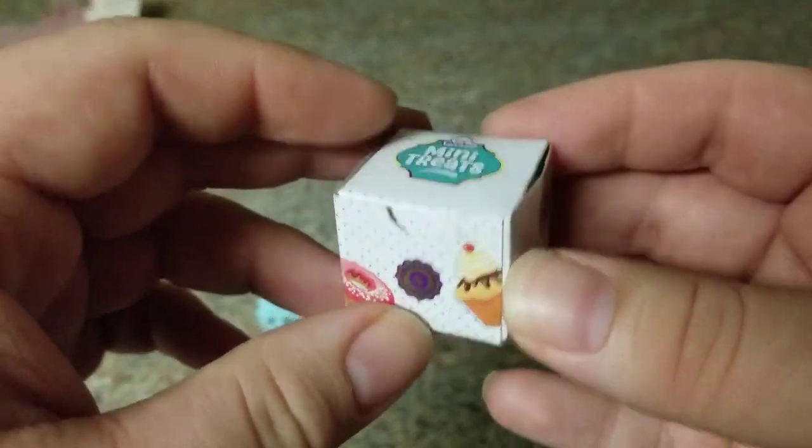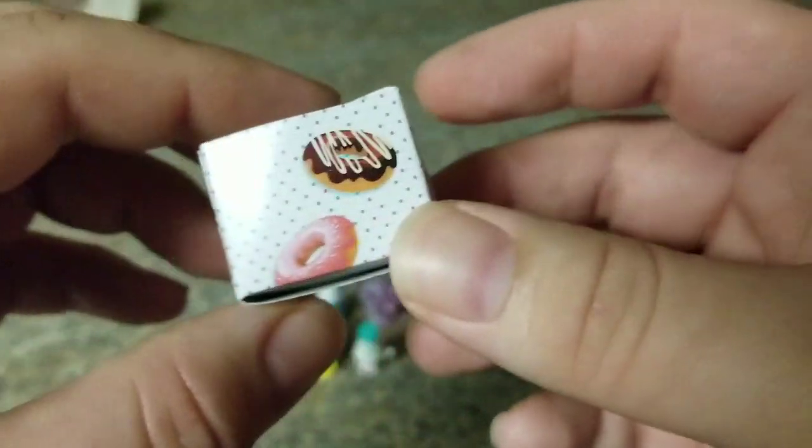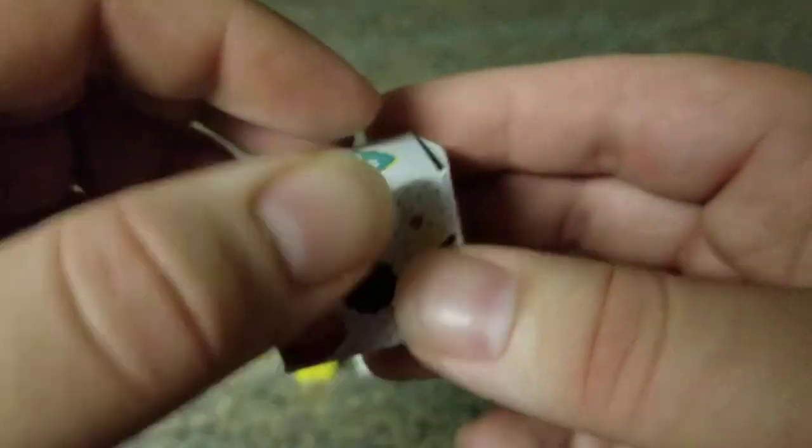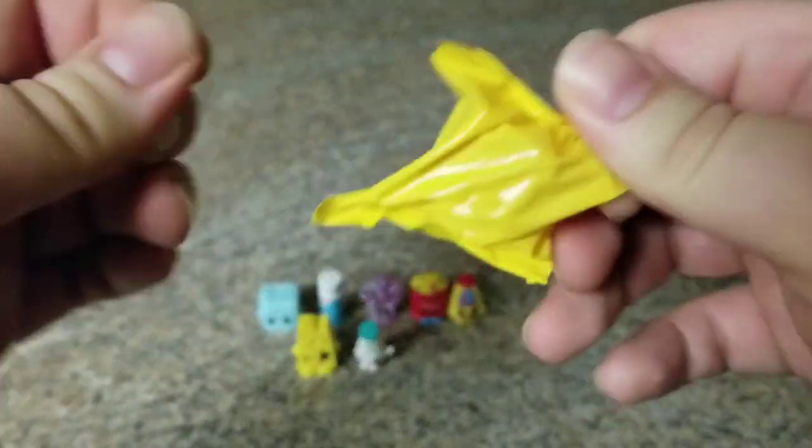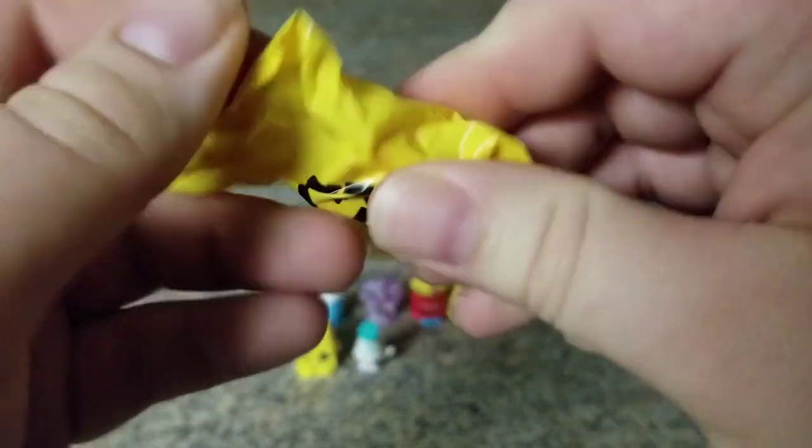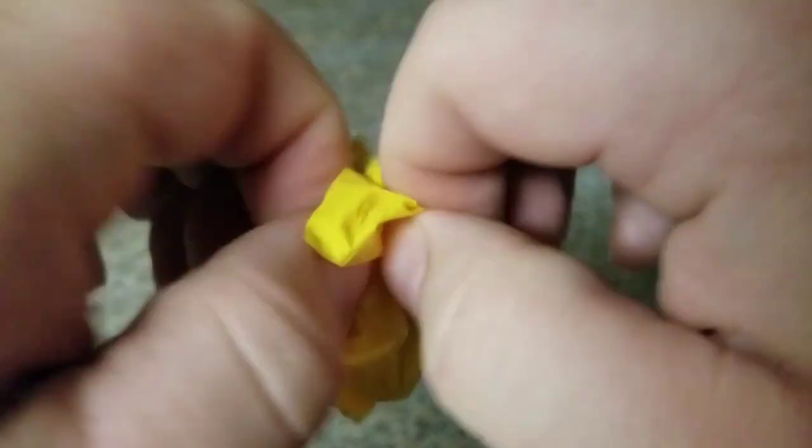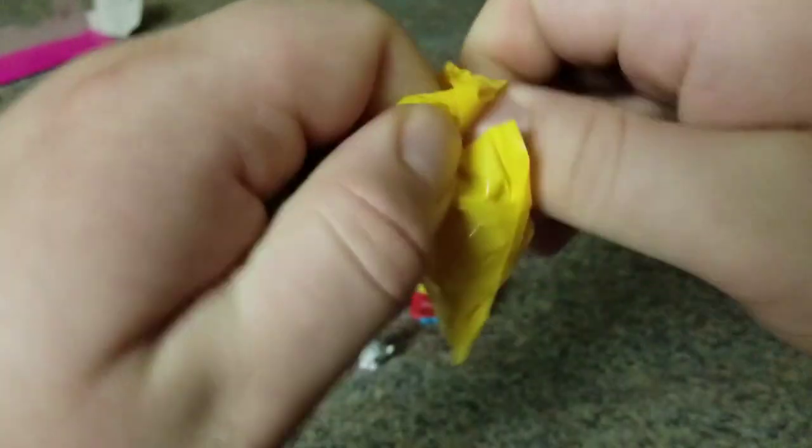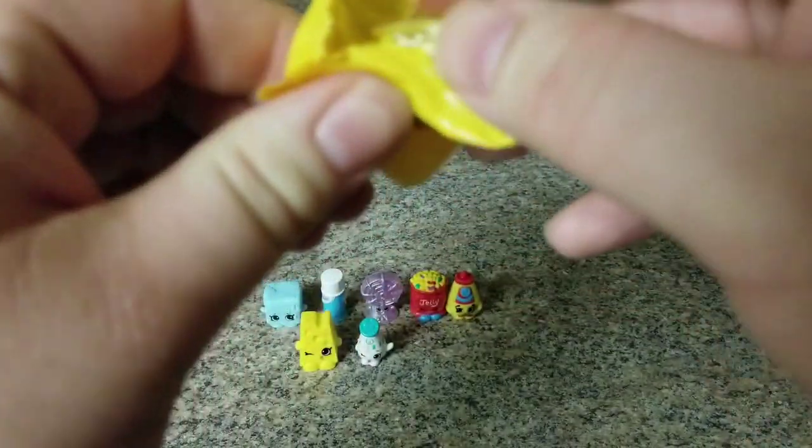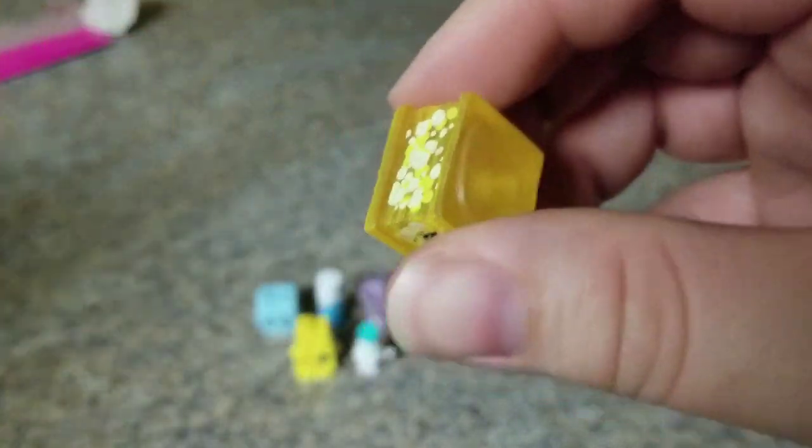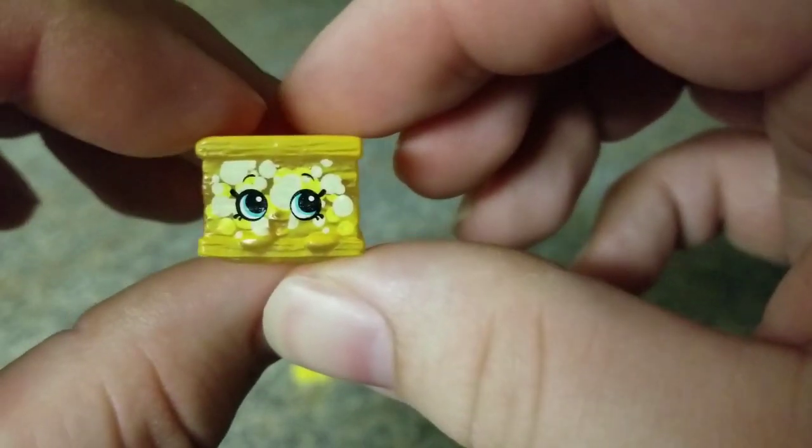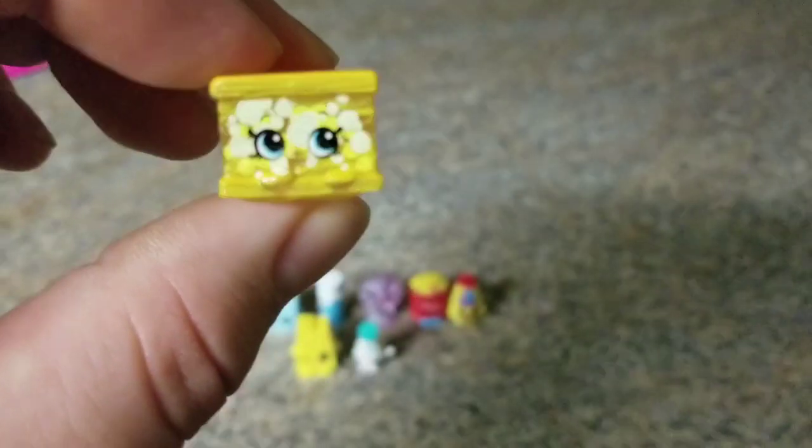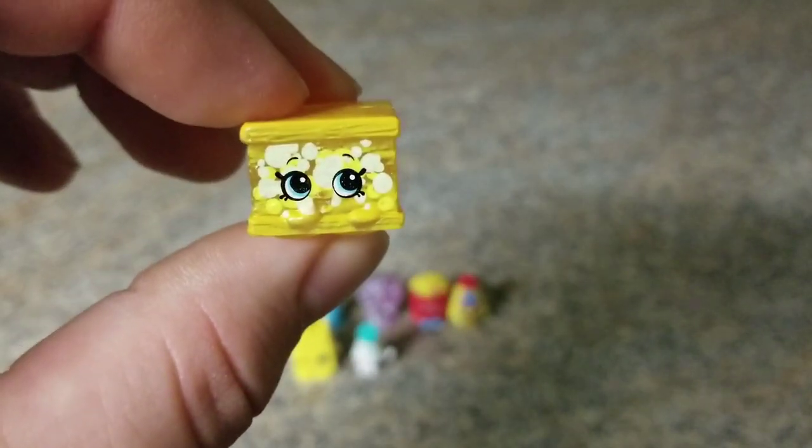Alright, this looks like it's a mini treats box. So we got some sweets, some donuts in here, maybe a cupcake. Let's see what we got. Let's see what we got here. Oh, rip it open, and we have... what looks to... let's see, season three. It's a lemon cake, maybe lemon.